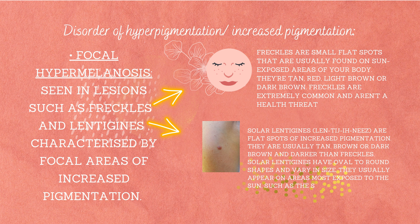Solar lentigines are flat spots of increased pigmentation, usually tan, brown, or dark brown, and darker than freckles. They have an oval to round shape and varying size. They usually appear on areas most exposed to the sun, such as the scalp, face, hands, arms, and upper trunk.